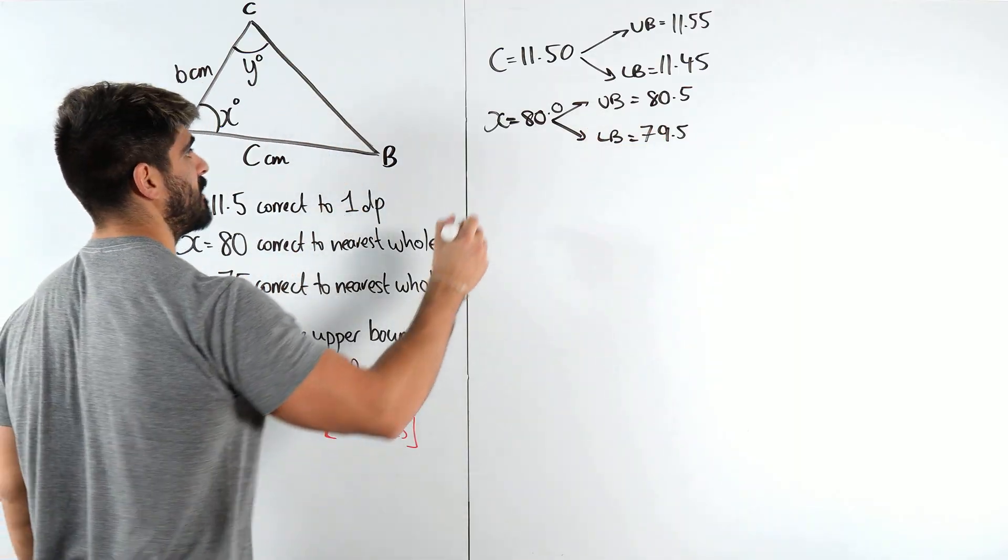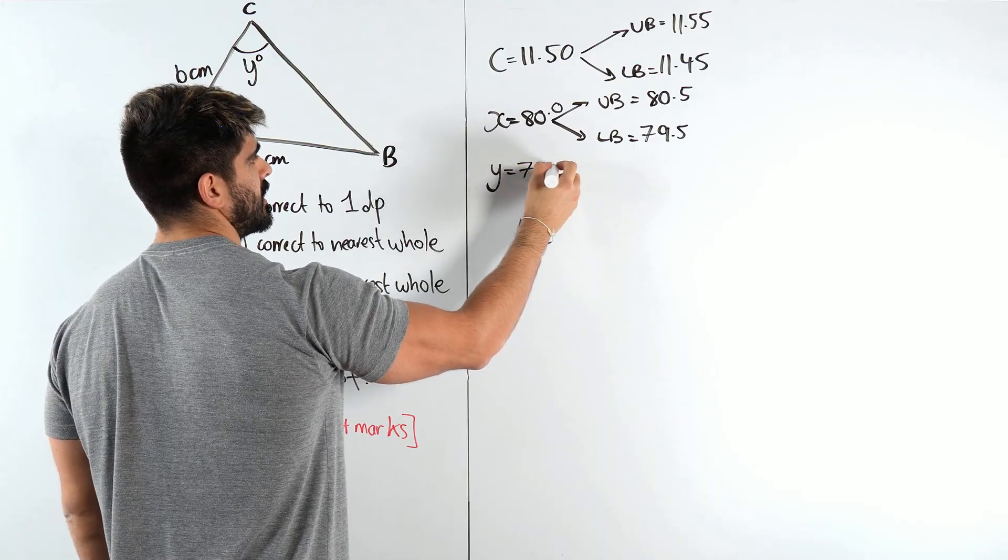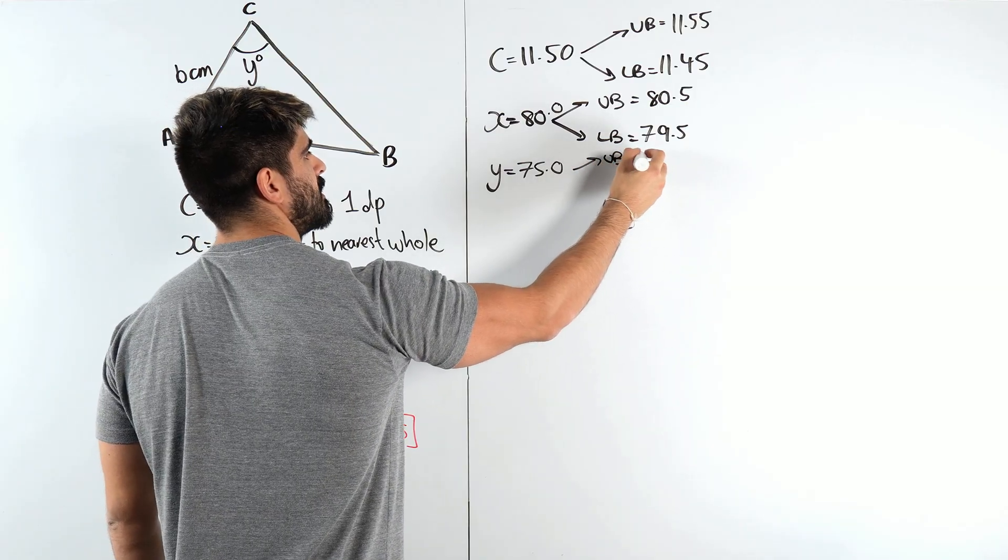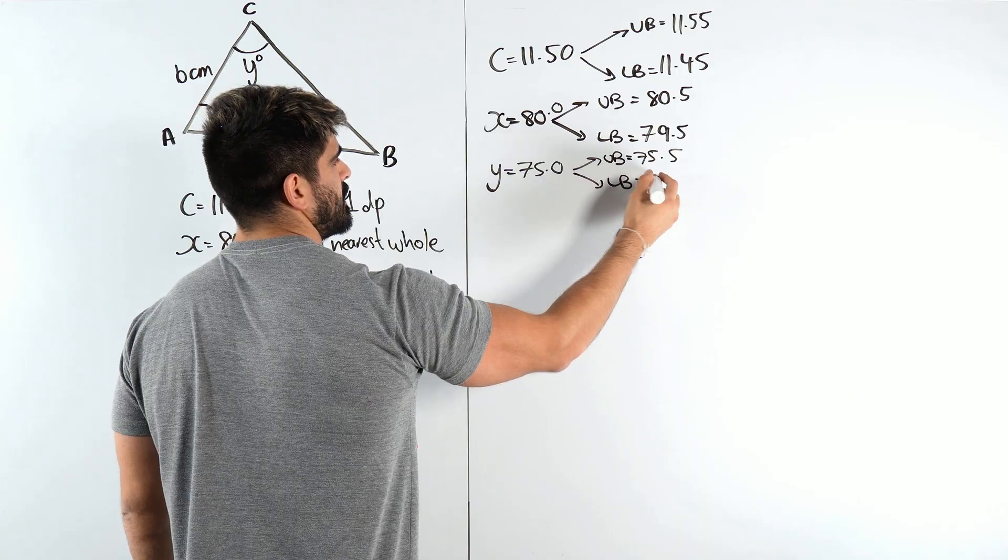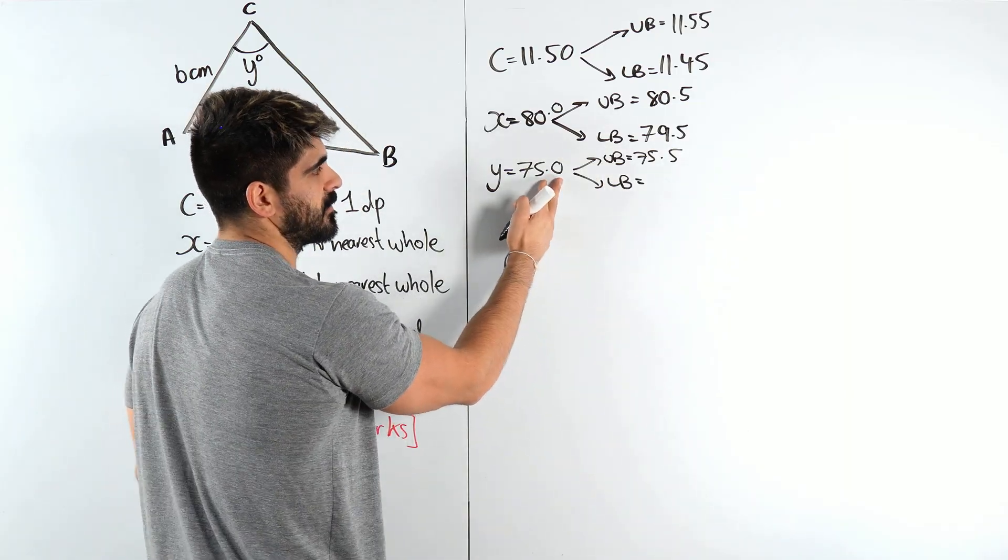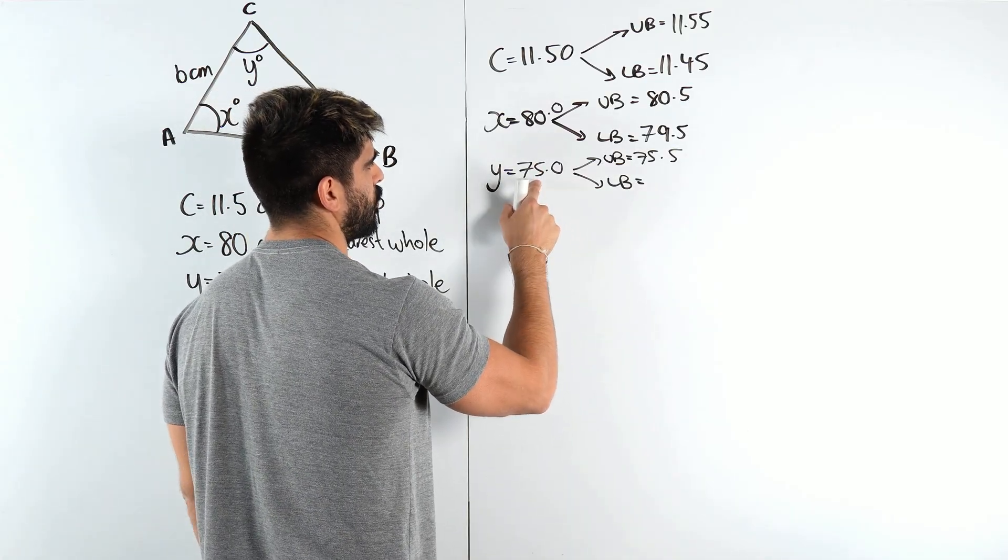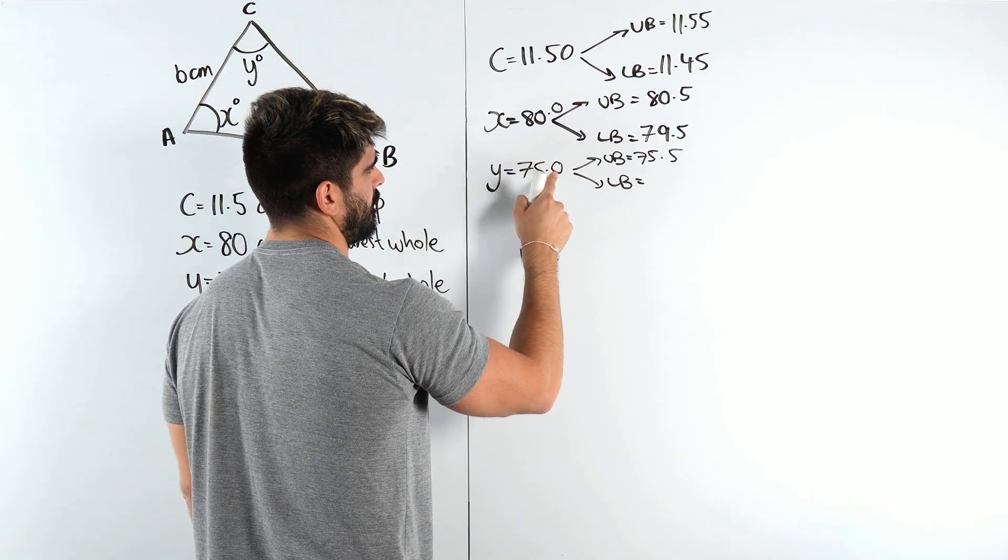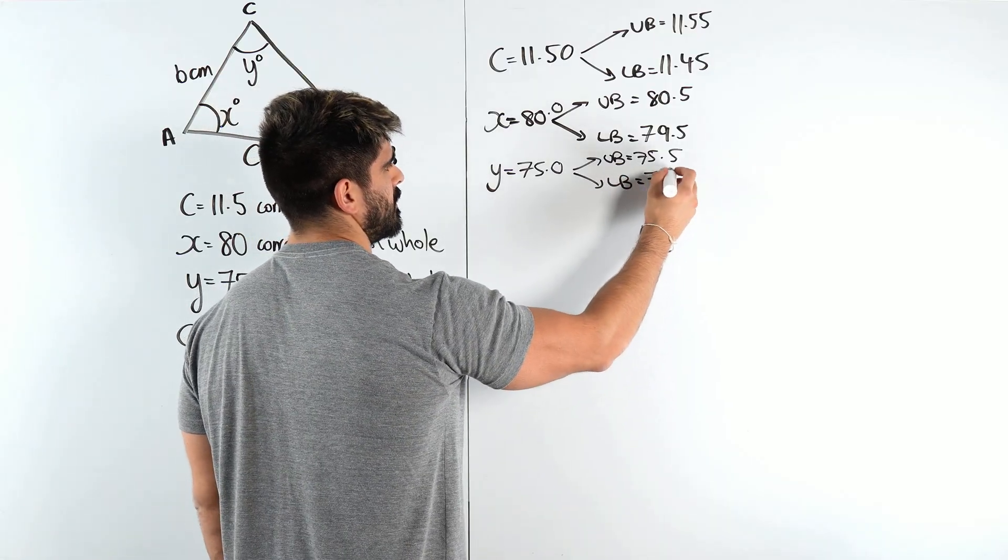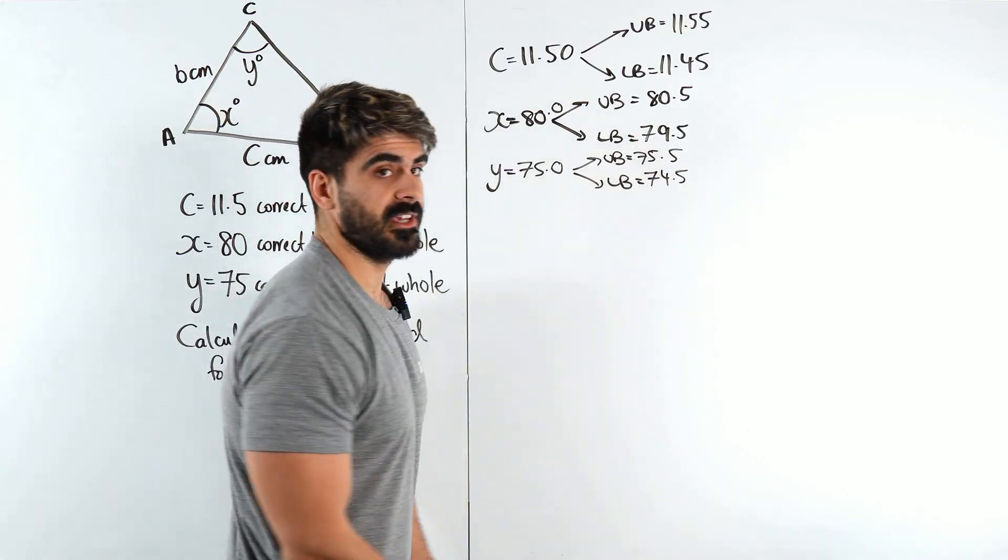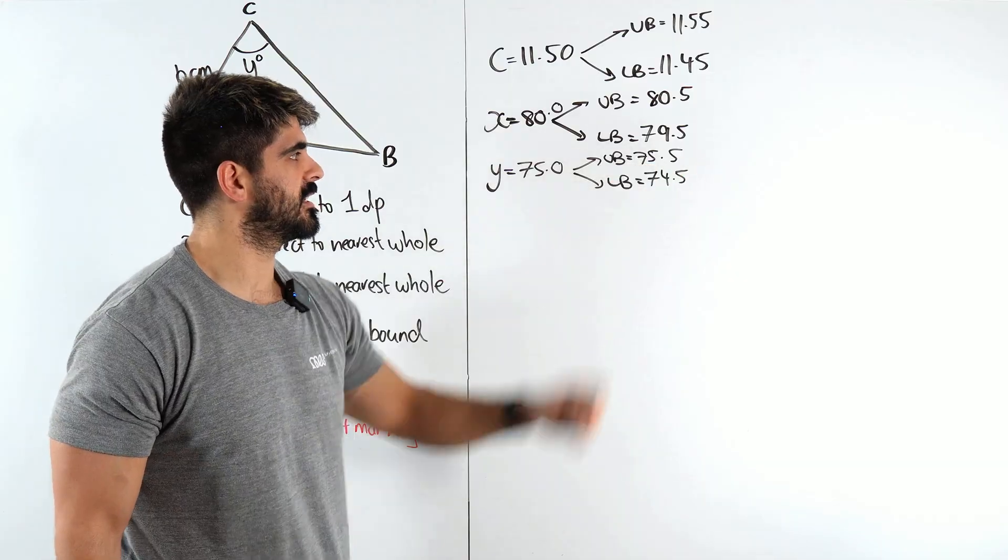The same thing for the 75. So y is 75. You can think of it as 75.0. So your upper bound is 75.5 and your lower bound is 74.5. The difference is 1.